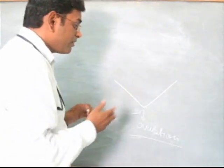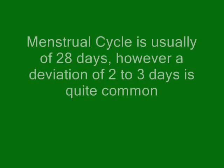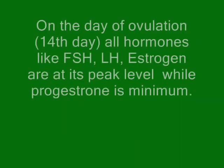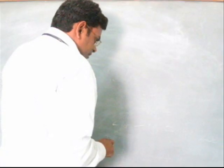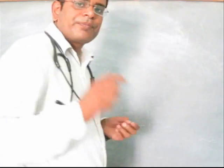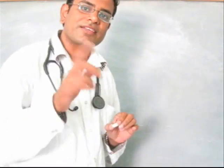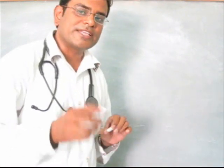The menstrual cycle is usually 28 days; a variation of two to three days is commonly seen. On the day of ovulation, which is the 14th day, all the hormones are at their peak level except progesterone. The longest cycle minus 10 gives you the last day of the fertile period.